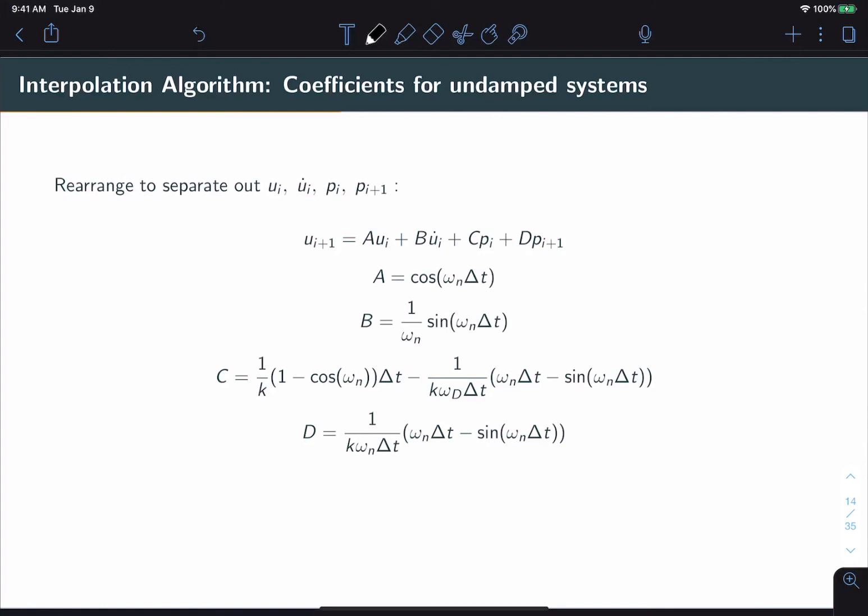In order to make this equation easier to implement as an algorithm we can recognize that the quantities ωn, k, and Δt are fixed. In other words they don't change iteration to iteration. So we can rearrange the equation in terms of the quantities that actually do change. Our final algorithm equation looks like a sum of coefficients times each of those variables, and those coefficients are defined directly from the previous equation. These coefficients a, b, c, and d only need to be calculated once before the algorithm can be run.